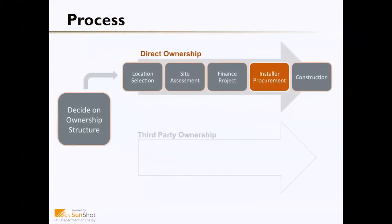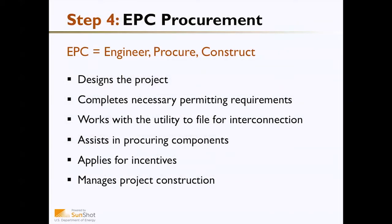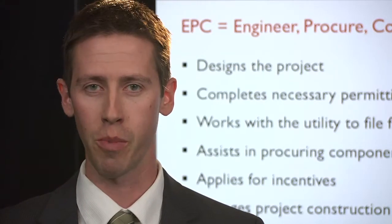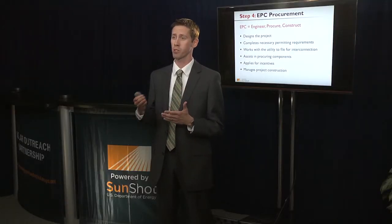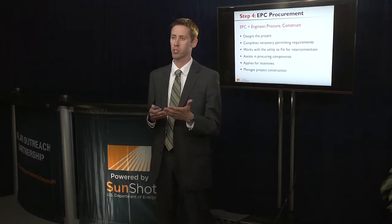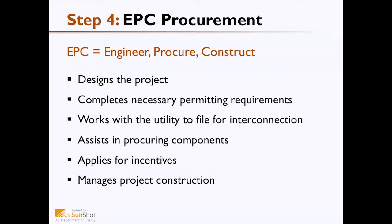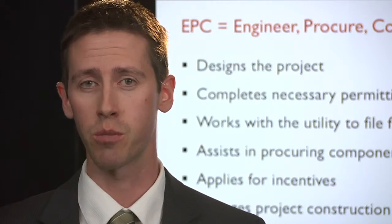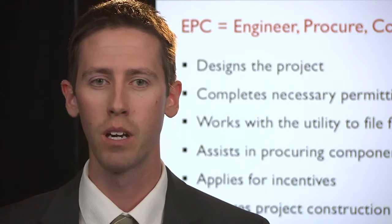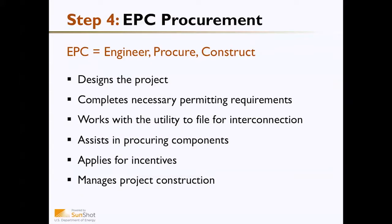Step four is EPC procurement — engineer, procure, and construct. The EPC contractor designs the project, determining what the system will look like and which panel and inverter manufacturers will be used. They complete the necessary permitting requirements, working with the utility and local permitting officials to pull appropriate permits and ensure the system is designed and installed safely. They also work with the utility for safe and feasible interconnection, pay for the interconnection, and assist in procuring components — panels, inverters, wiring, racking, and mounting systems, whether ballasted or poles for ground-mounted systems. They apply for all available incentives including tax incentives, state rebates, and utility incentives, and manage the project's construction from beginning to end to ensure everything is installed properly, safely, and on time.